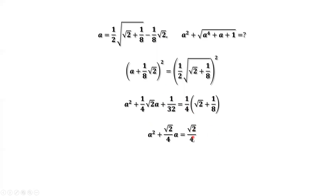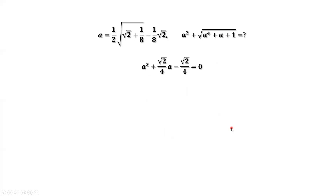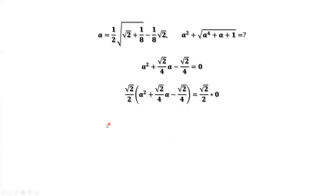Move the square root of two over four term to the left-hand side. Then multiply both sides by square root of two over two. Simplify the left-hand side: square root of two times square root of two over four equals one-fourth, so one minus one-fourth equals zero.